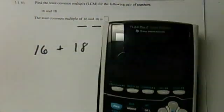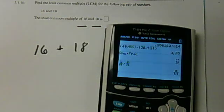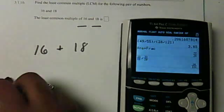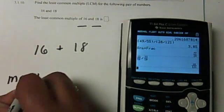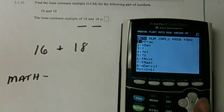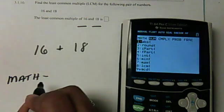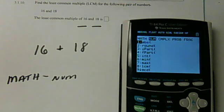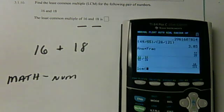We're going to do the same thing that we did in the GCF one. We're going to go to Math, just a reminder. You go over to Num, N-U-M, and then you go to number 8 or hit number 8. You can scroll down with the arrow keys or you can just hit number 8.